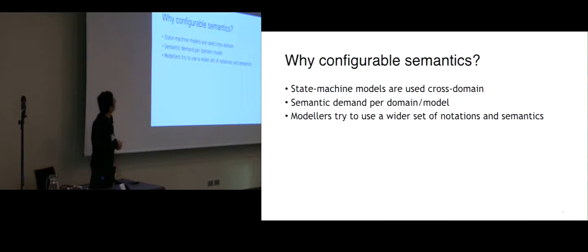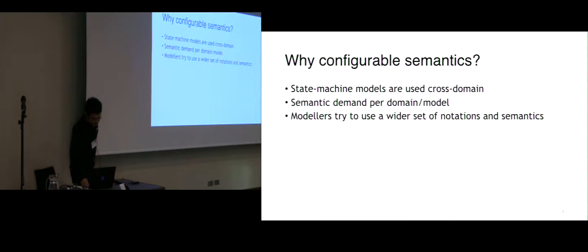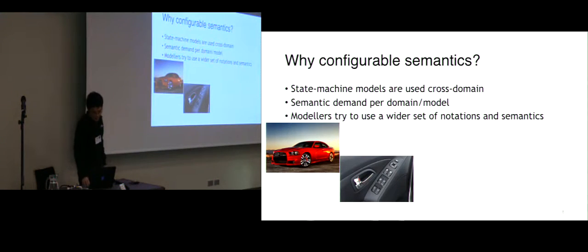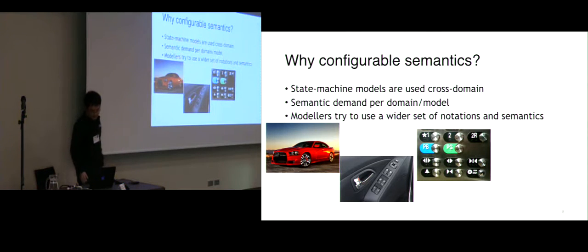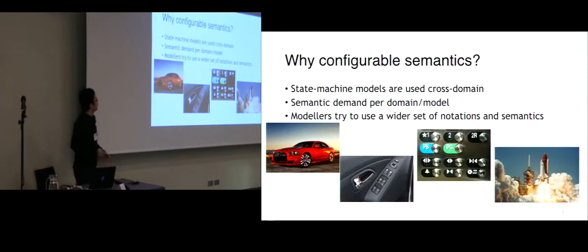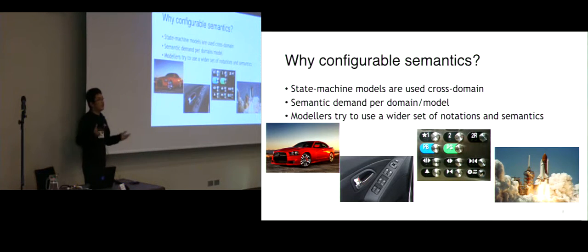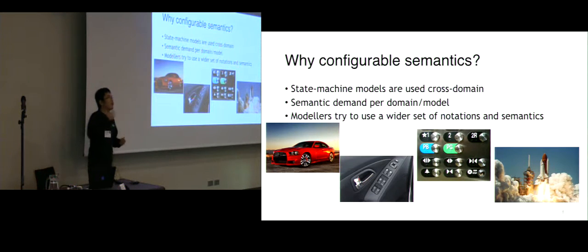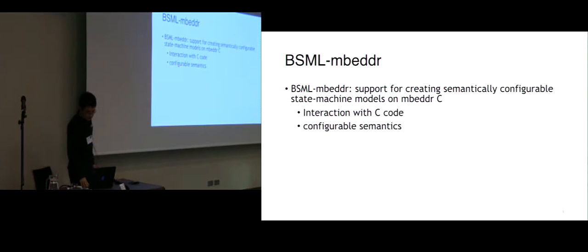Why do we choose BSML and why do we need configurable semantics? The reason is that state machine models are used cross-domain. For example, in a car we have a power window system to control the car, and we need control systems for elevators and for space shuttles. So we have multiple domains that need state machine models. The semantic demands for different domains, or sometimes even different models, can be very different because those areas have different terminologies. Also, there is previous evidence showing that modelers are trying to use a wider set of semantic annotations, so they want more flexible semantics in the language.